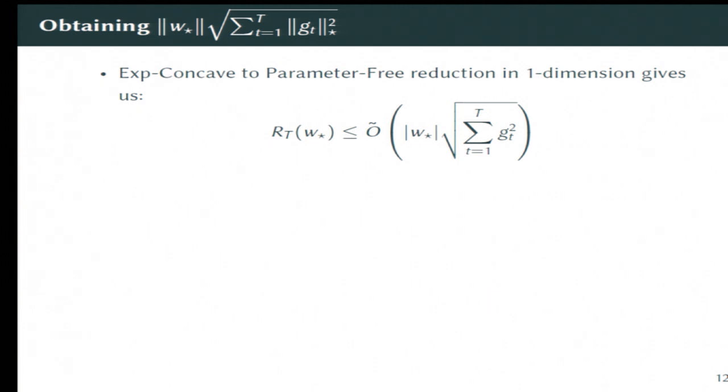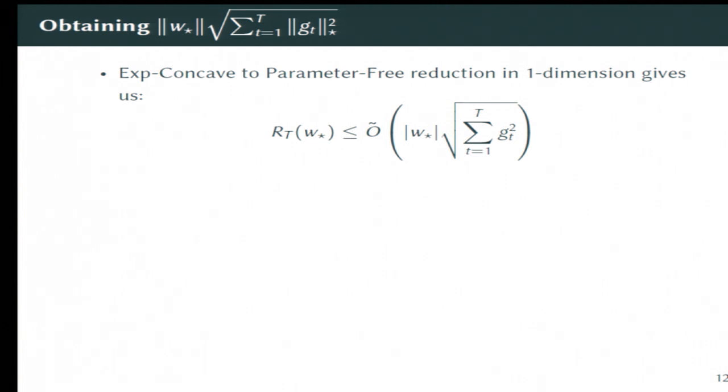So I mentioned that we have an exp-concave to online linear optimization reduction, but that reduction is kind of slow in high-dimensional spaces. Fortunately, dimension one is not a high-dimensional space. So we can run this reduction really fast in that space, and it turns out that it just pops out exactly the second-order regret bound that's parameter-free that we were looking for. But still, this is one dimension. So what do we do? We apply the second reduction.